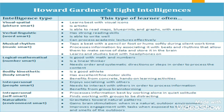The logical mathematical thinker is good with math and numbers, is a linear thinker, and needs order and systematic directions or steps in order to process content. The bodily kinesthetic or physical intelligent person is often a good athlete with excellent motor skills and benefits from concrete hands-on learning activities. The interpersonal person enjoys socializing with others, needs to interact with others in order to process information, and benefits from group brainstorming. The intrapersonal person processes information best by working alone in quiet solitude and finds working in groups very distracting.